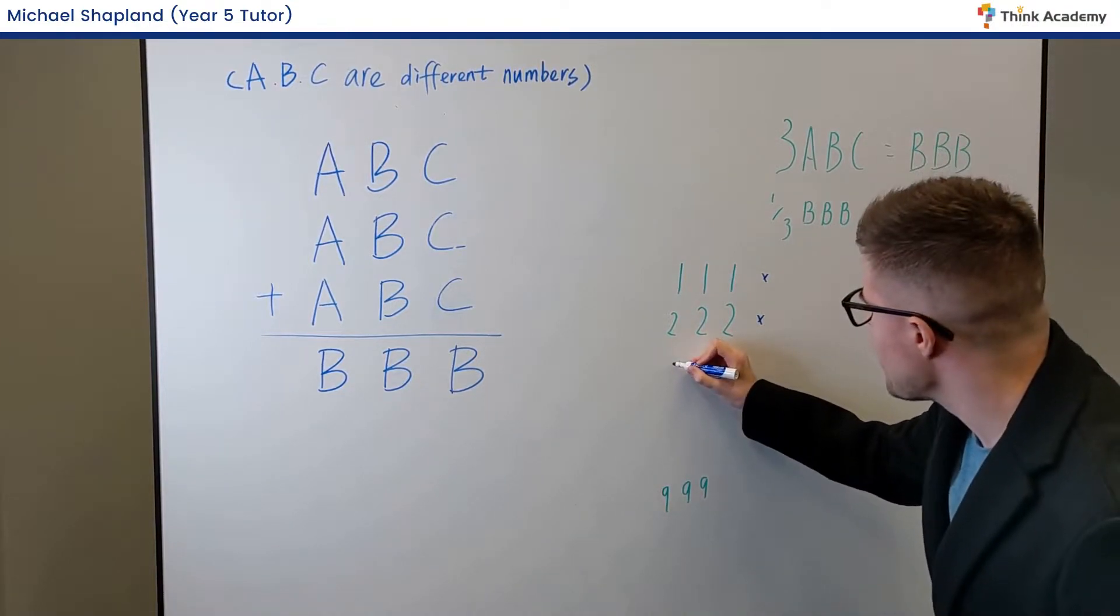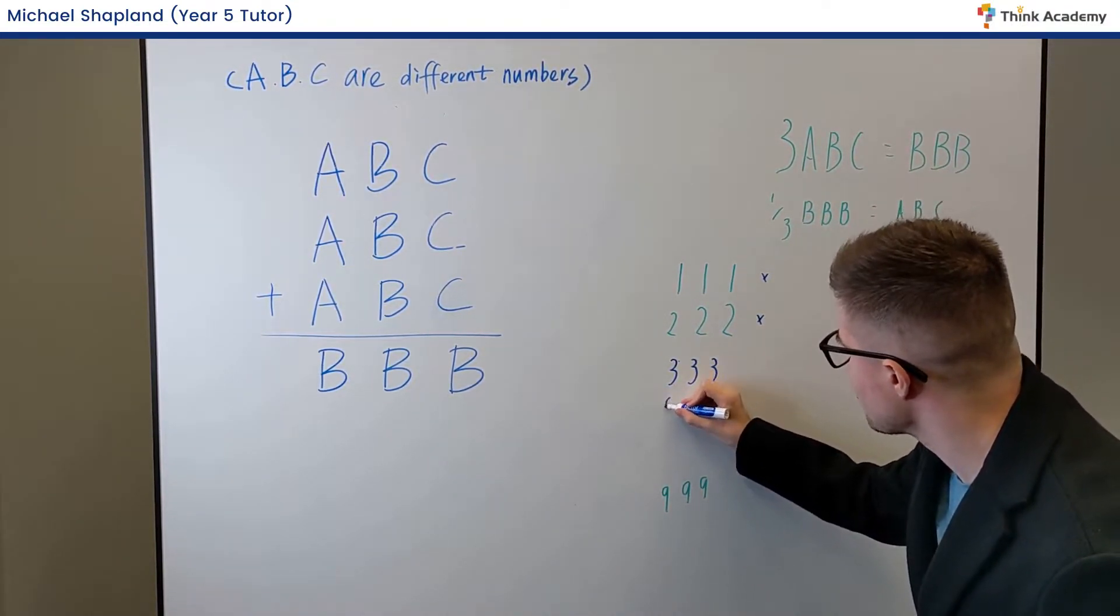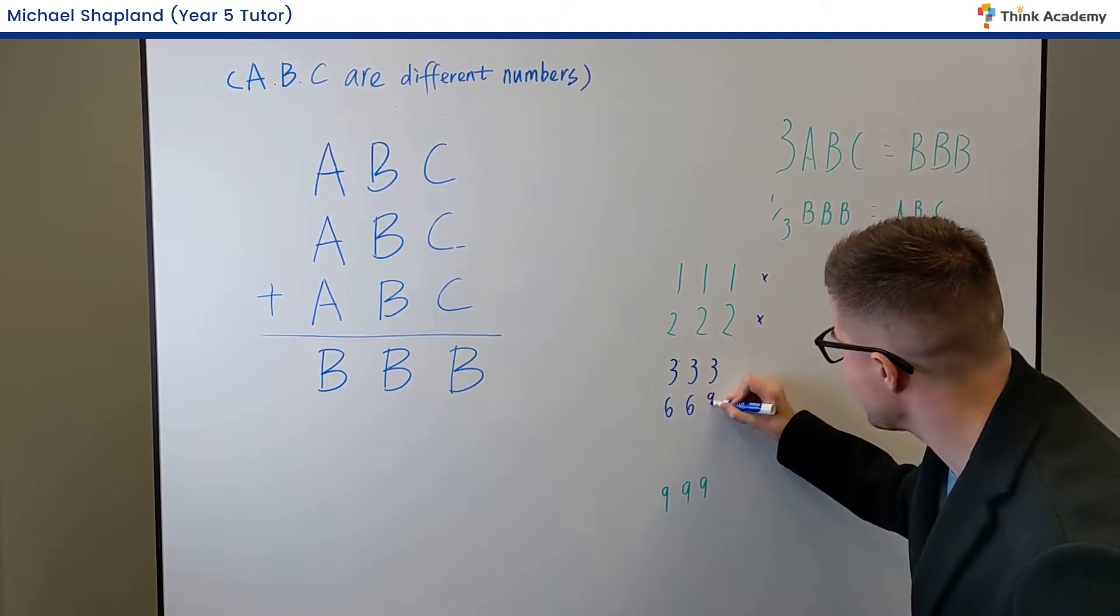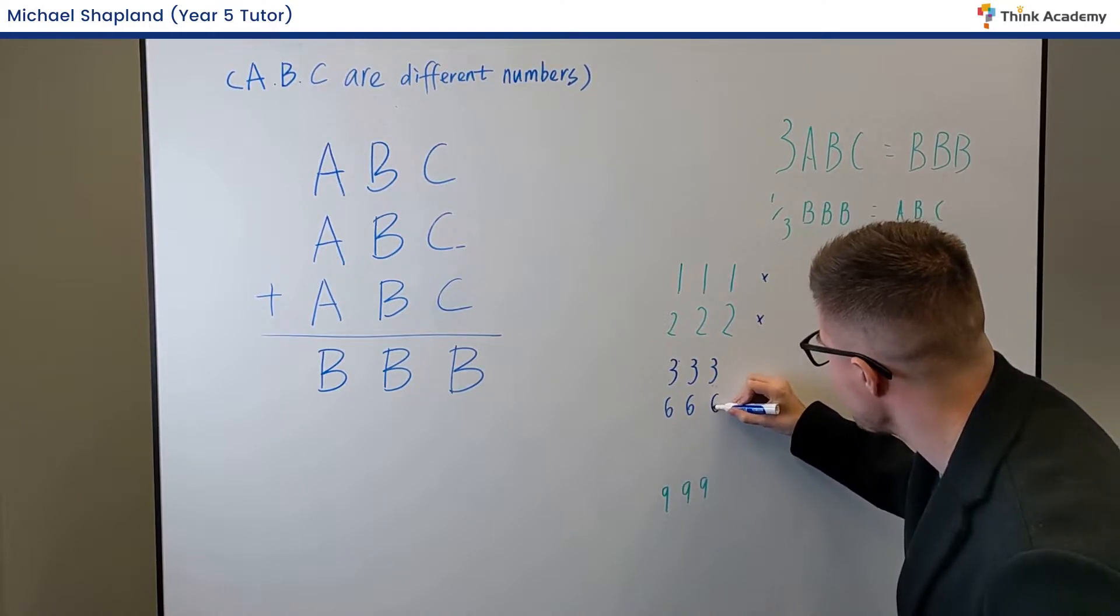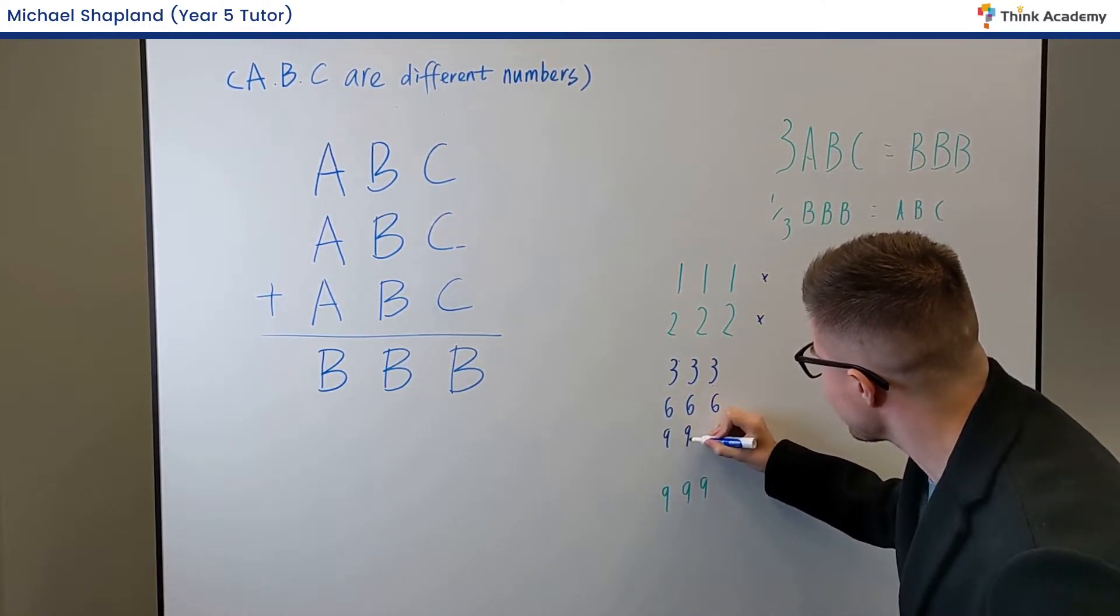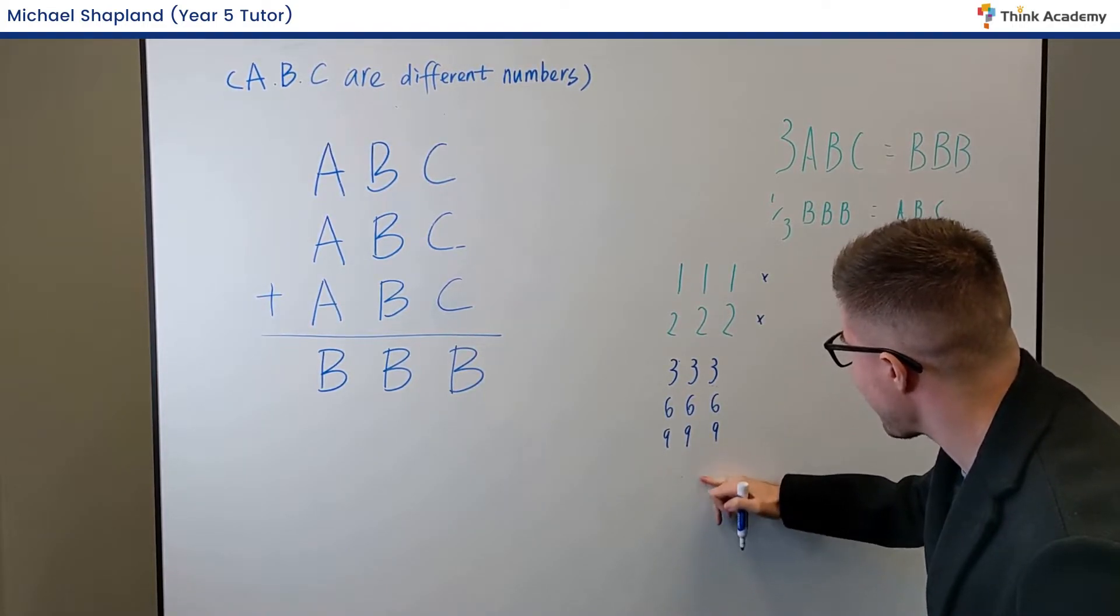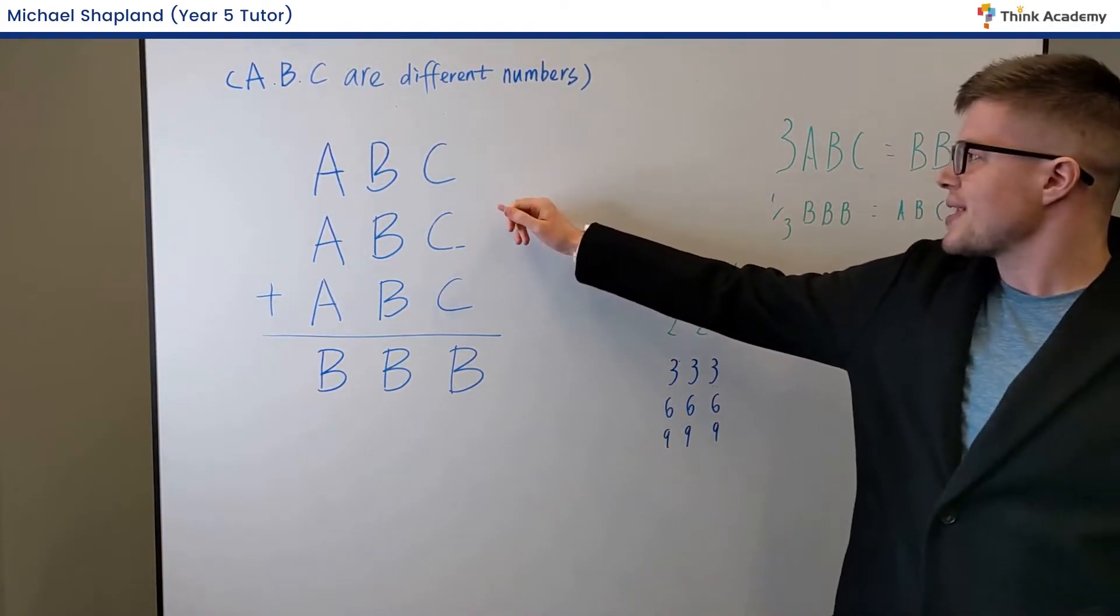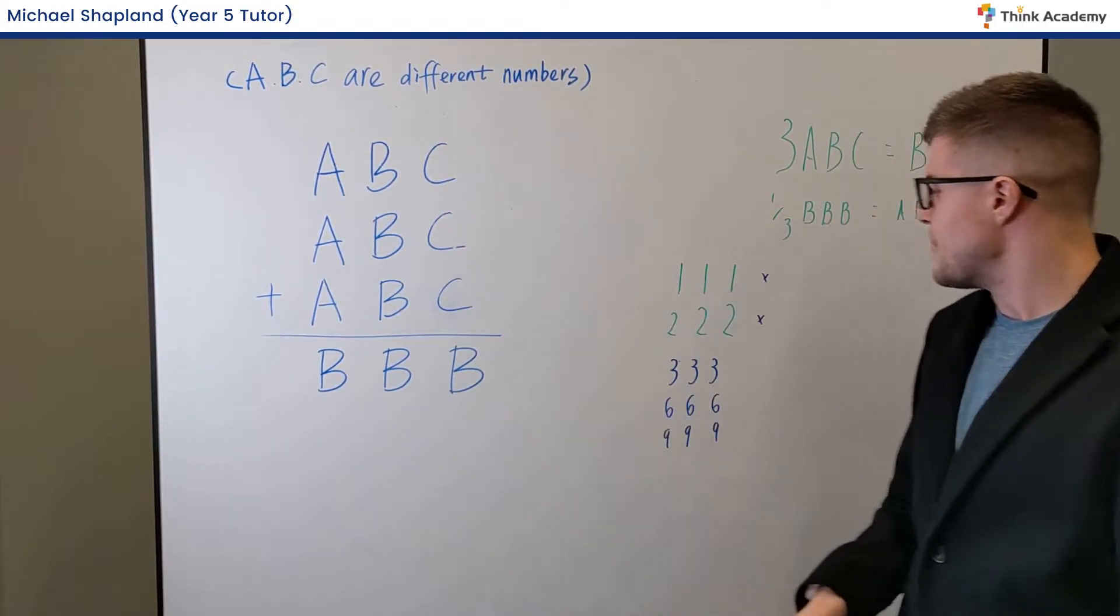If we start thinking about numbers like 333, 666, and 999, these consist of repeating numbers. And if we return to this here, we know A, B, and C have to be different numbers.